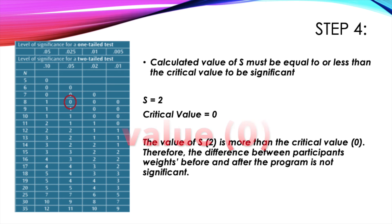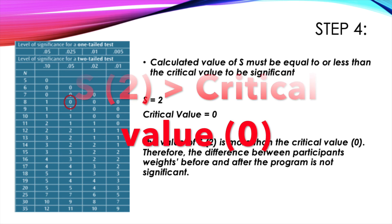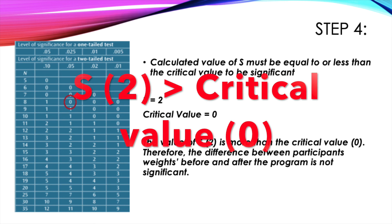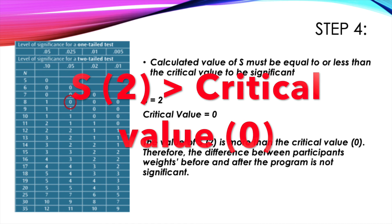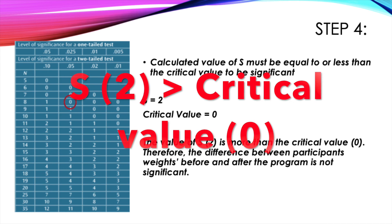As I've just included on screen here, you may also wish to include this method of writing whether or not your results are significant. This simply means the S value of 2 is greater than the critical value of 0, and therefore the results are not significant.